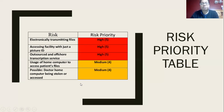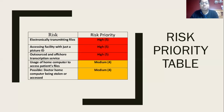Outsourced and offshore transcription services have their own risks. Sometimes they're used because they're cheaper, and cheaper services can mean cheaper quality of work, which leads to more mistakes. People also use these transcription services because they're quicker, but the quicker the work gets done, sometimes the more mistakes there are. I gave this a rating of high risk priority with a score of five.